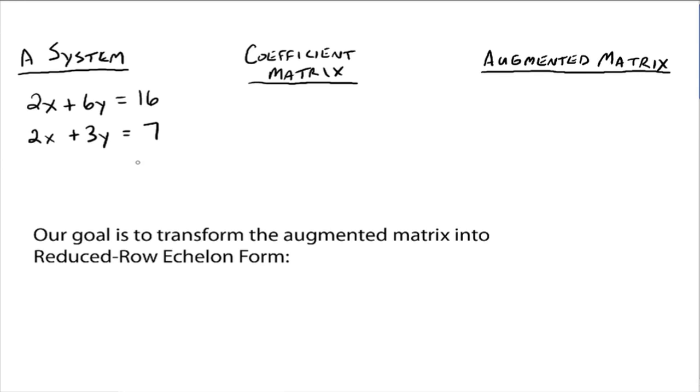So I'm just using this as a simple example to get across the bigger idea of how to use matrix row transformations, which comes in handy with bigger systems. Alright, so we have two things we want to talk about. First, a coefficient matrix.